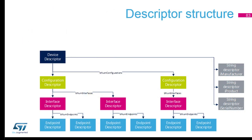Each interface should have its endpoint descriptors. When you address an endpoint, you talk to it and it has some characterization: is it an interrupt, isochronous, or bulk endpoint? Endpoint zero is for setup. Always keep in mind, you can only have one configuration activated at a time — you can't have two configurations active. But within a configuration, you can have several interface descriptors, meaning different classes.